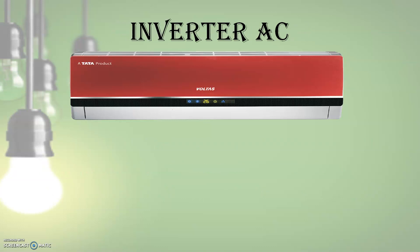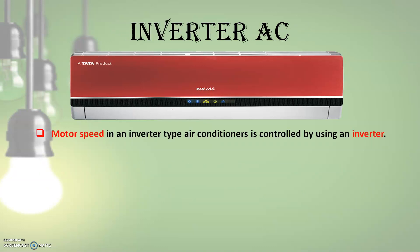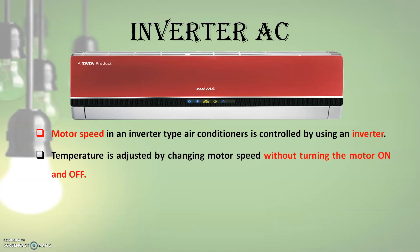In an inverter type air conditioner, temperature is adjusted by changing the motor speed without turning the motor on and off. An inverter type air conditioner adjusts the speed of the compressor to control the refrigerant gas, thereby consuming less current and power.